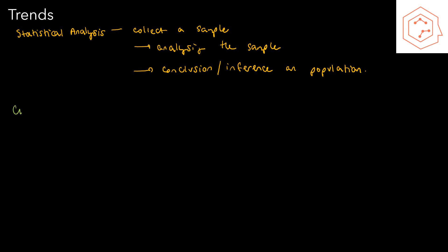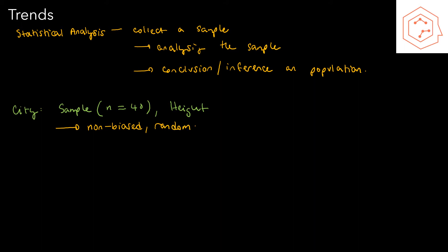As an example, suppose I have some city and I want to find the average height of a person in this city. I could collect a sample of 40 people, so the size of the sample is 40 elements, denoted by lowercase n. You may also refer to the elements of the sample as experimental units, because you measure a variable from these units. It's important that the sample be collected in a non-biased and random manner such that every single person picked had an equal chance of being selected — just like flipping a fair coin where there's an equal chance of heads as tails.